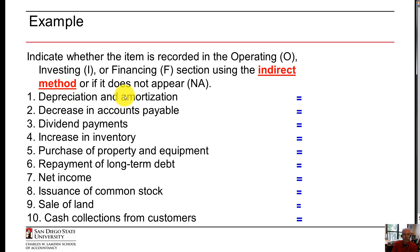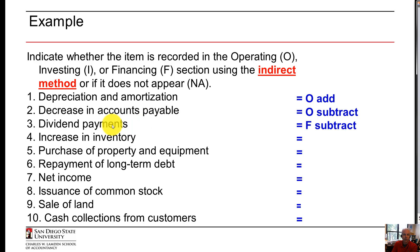Depreciation and amortization goes in the operating section — we add that back. Decreases in accounts payable: that is operating, and decreases would be a subtraction. Dividend payments are financing — an outflow. Increases in inventory: a current asset, so it's operating, and would be subtracted. Purchases of property and equipment: a long-term asset would be investing — we purchased it, so it's subtracted.